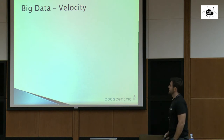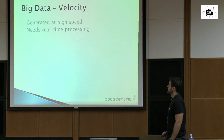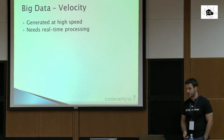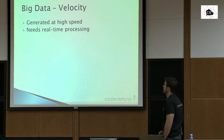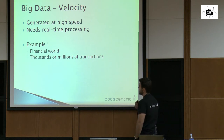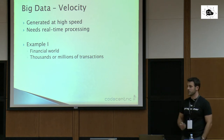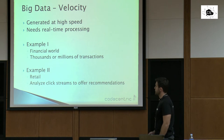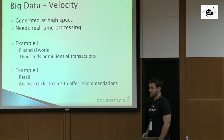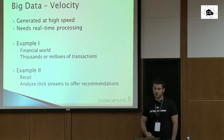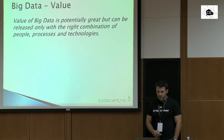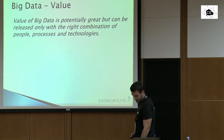Velocity is the third main characteristic — information is generated at high speeds and needs real-time or near-real-time processing. In the financial world, for example, thousands or millions of transactions per second must be analyzed for possible fraud. In retail, Amazon and other web stores analyze click streams of their users to offer sensible recommendations and increase profits.